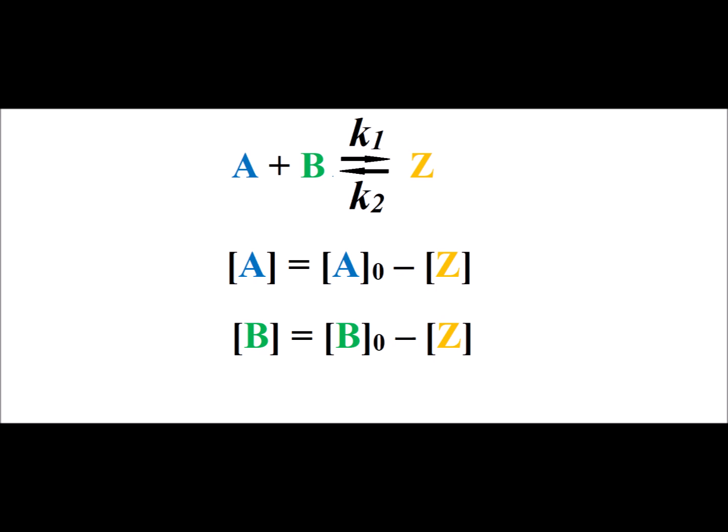Note that the concentration of a is equal to the initial value of a, a sub 0, minus the concentration of z. And the current concentration of b is equal to its initial concentration, b sub 0, also minus z. We get these expressions because for each mole of either a or b that is converted to z, we gain one z and we lose one a or b.